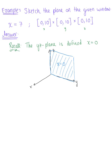We also want to keep in mind that the yz-plane is made up of all the ordered triplets x, y, z such that the x coordinate is 0.